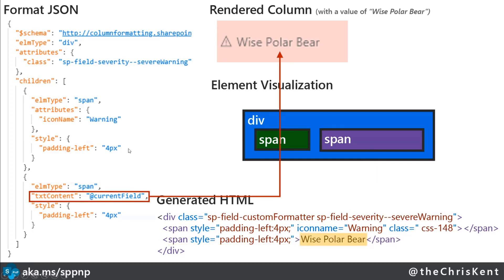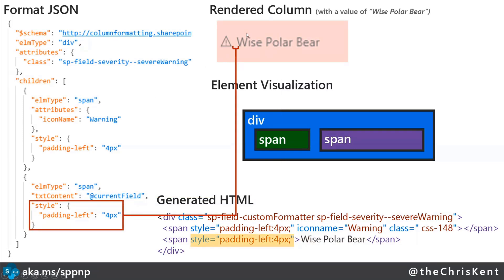If I want to do that conditionally, I can do all that kind of stuff. I also want to make sure it's not right up against the edge, so I add a paddingLeft CSS attribute of four pixels. Then I want to put my text — I've got another span with my first kind of magic text, the placeholder field @currentField. That just means whatever the value is — whether it's text, a number, or even a calculated value — I can slap that in there. There's a series of placeholder tokens: @me is the current user's email address, @now is the current date and time at render. For each row, it swaps that out and puts whatever the value is. In this case, it's 'wise polar bear'. And you can see all of this is just generating the HTML, which then generates that pretty image.